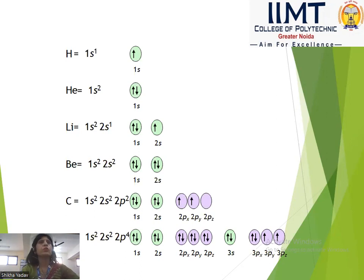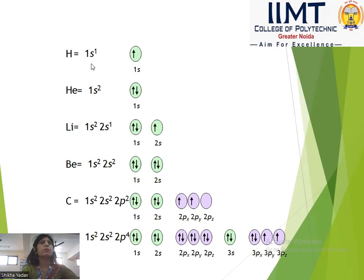We are now showing the electronic configuration of some elements. For example, hydrogen is 1s¹. Hydrogen has atomic number 1, so one electron enters the 1s orbital.